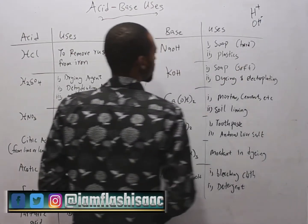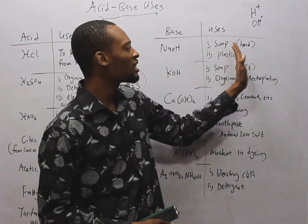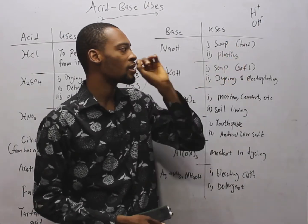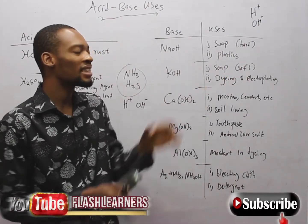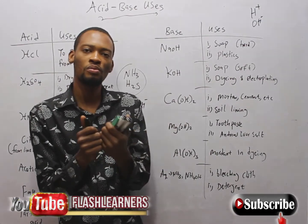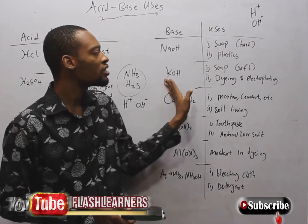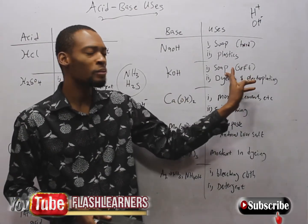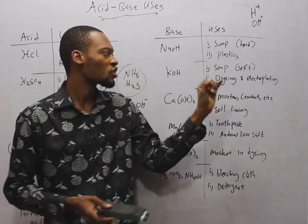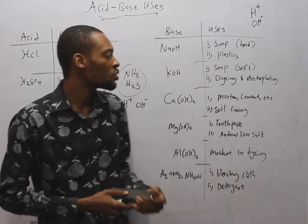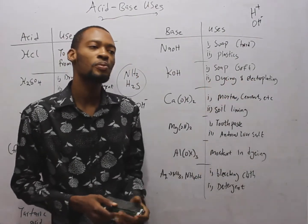For bases: NaOH is used in soap making and plastics. Soaps made with NaOH are usually hard soap. KOH is used in soap making, but this time around it produces soft soaps. It is also used for dyeing and electroplating.